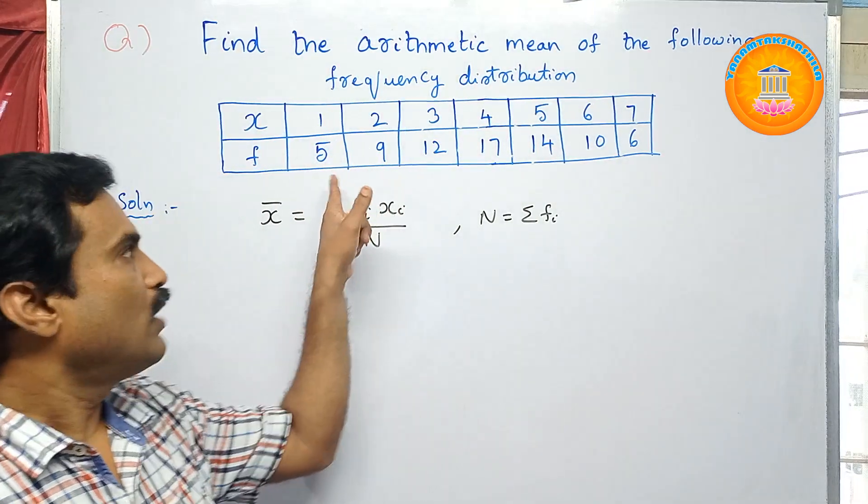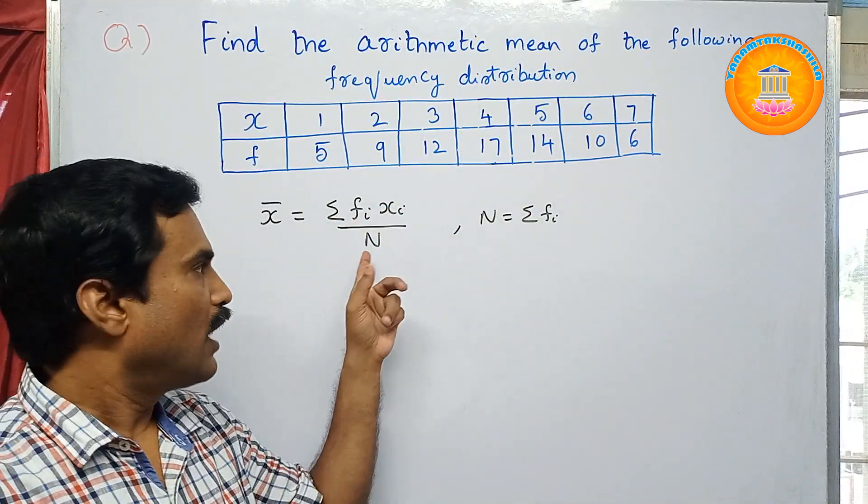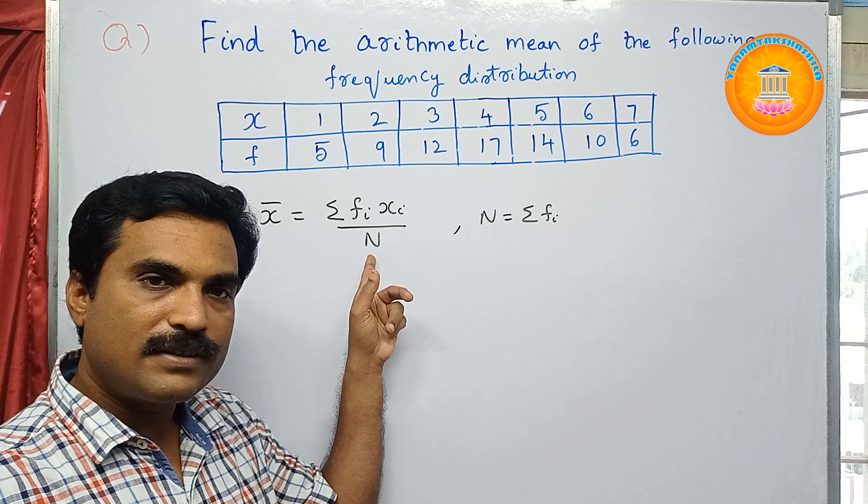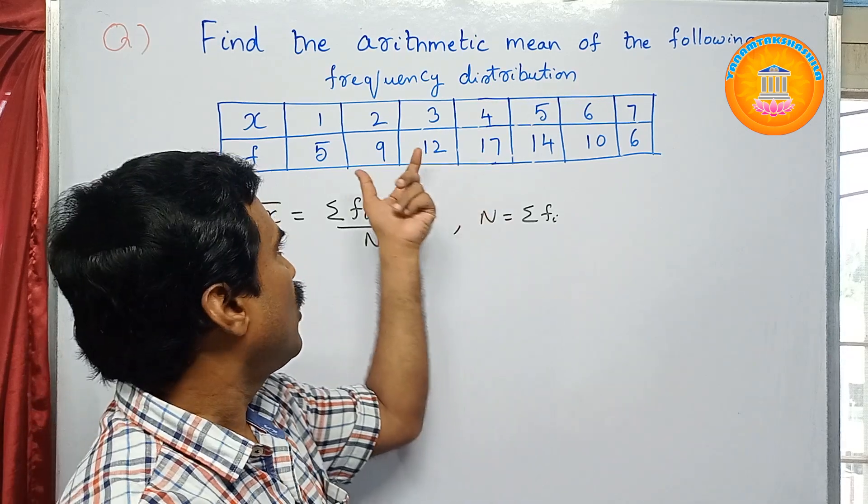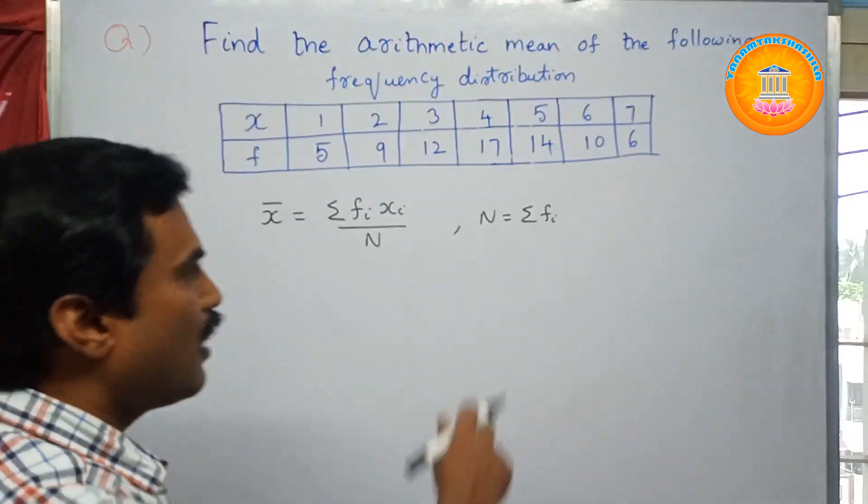That is the numerator. The denominator n is nothing but you have to add all these frequency values, that is Sigma f_i. So for this we'll form a table.